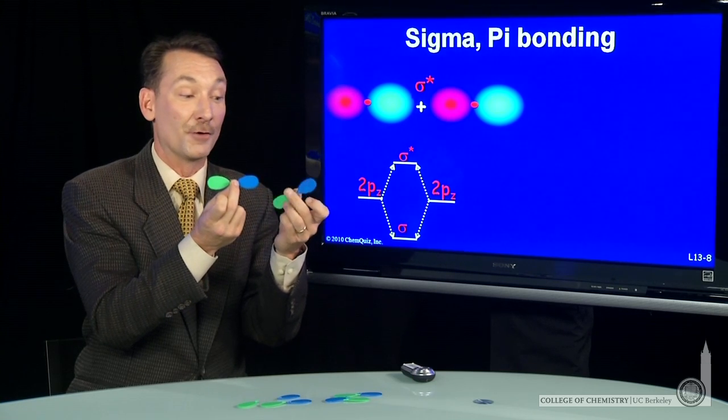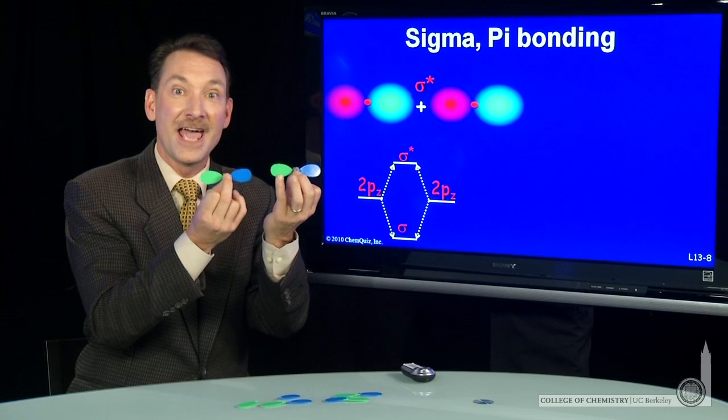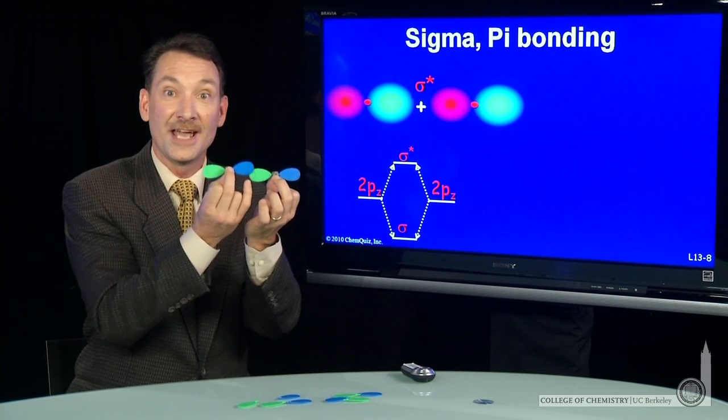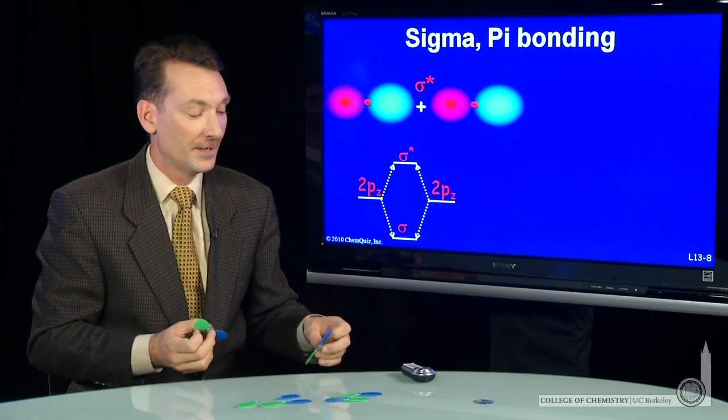I'll also get an antibonding orbital when I add them like this, where the positive and negative parts add to give me a node, zero somewhere between the two nuclei.